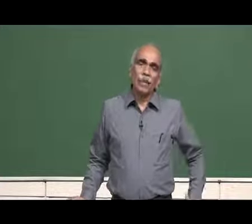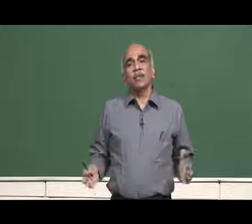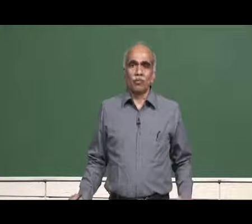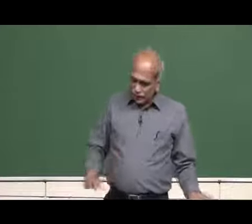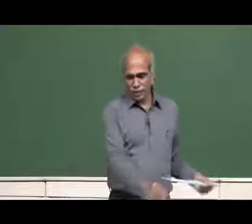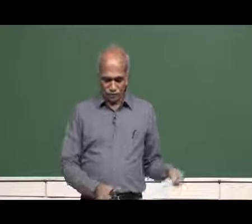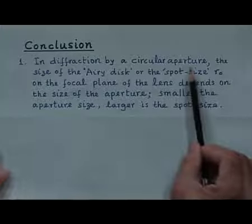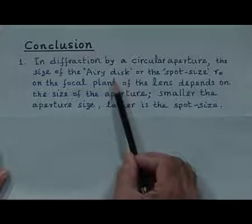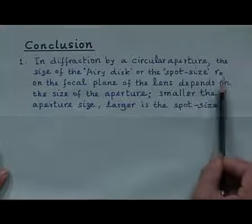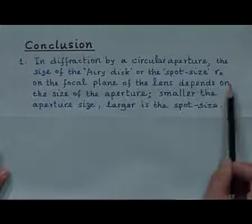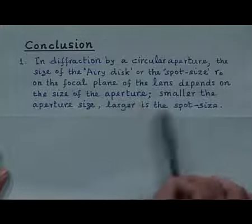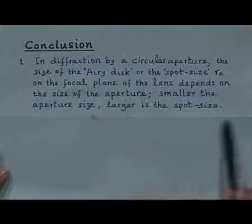When diffraction takes place, light enters the geometrical shadow and the spot size becomes larger. To summarize: in diffraction by a circular aperture, the size of the Airy disc on the focal plane depends on the aperture size. Smaller the aperture size, larger the spot size. When parallel rays — represented as plane waves — are incident on a lens, they focus to a spot of finite size, not a point as in geometrical optics.